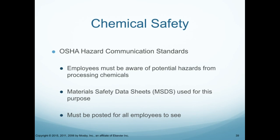How do we maintain chemical safety? We go by OSHA — the OSHA hazard communications standards. Employees must be aware of potential hazards from the processing chemicals. The Material Safety Data Sheets, or MSDS, are used for this purpose and should be readily posted for all employees to see. Always look for the MSDS if you're looking for any information about a chemical you're using within your facility.